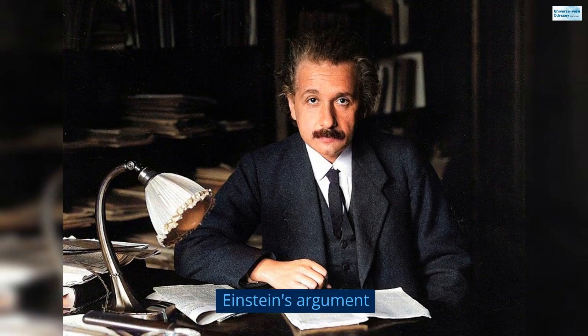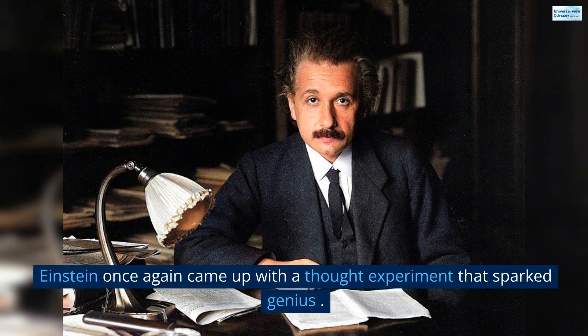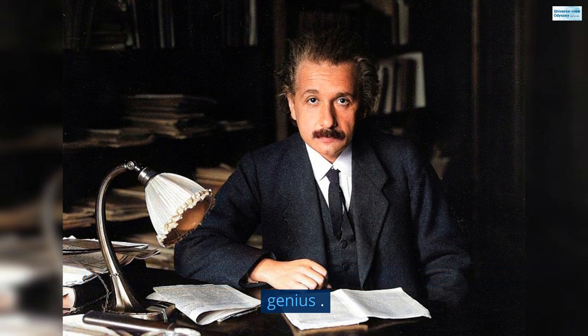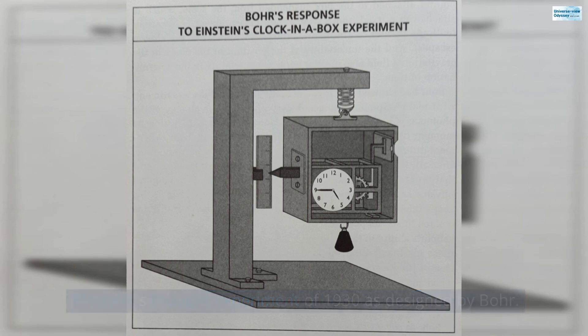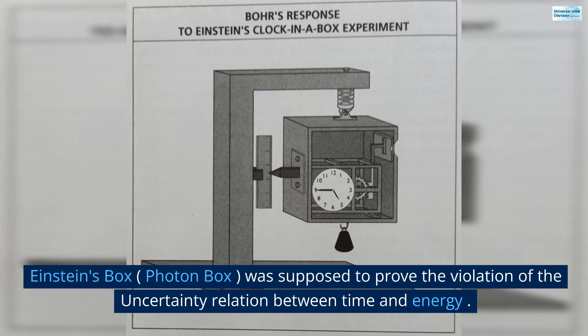Einstein's argument: Einstein once again came up with a thought experiment that sparked genius. Einstein's thought experiment of 1930 is designed by Bohr. Einstein's box, Photon Box, was supposed to prove the violation of the uncertainty relation between time and energy.